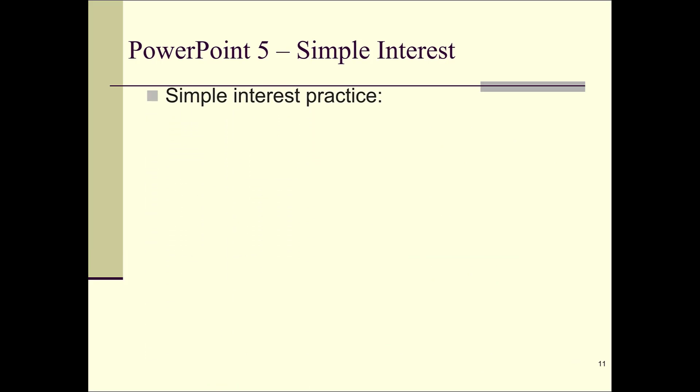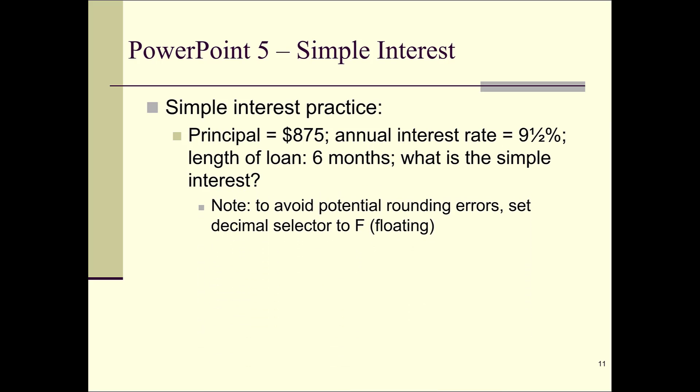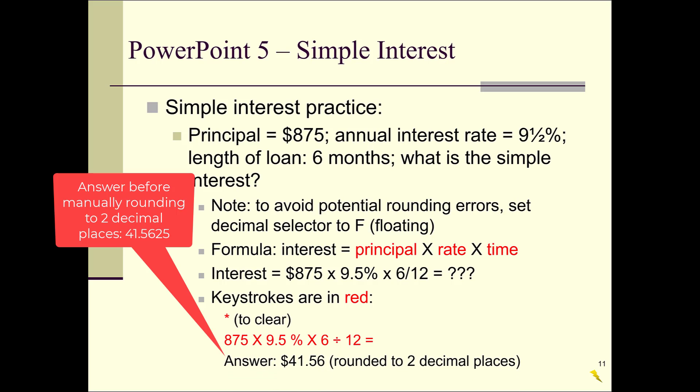Let's do some more practice. The loan is $875, the annual interest rate is 9.5%, and it's for six months. Keep the decimal selector set to F for floating. The formula is principal times rate times time: 875 times 9.5% times 6 divided by 12. The keystrokes are: clear, 875 times 9.5, hit the percent key, times 6, divided by 12, equals. The answer is $41.56. Remember to round all currency amounts manually to two decimal places.